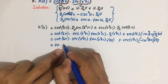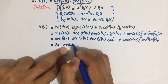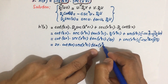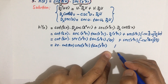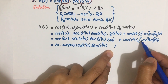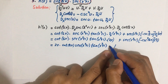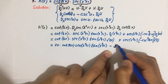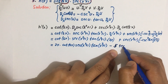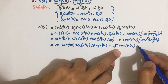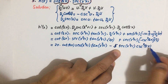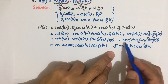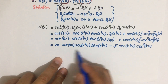Rearranging the terms, we write 2x first: 2x times cotangent 5x times secant of (x squared plus 1) times tangent of (x squared plus 1). Then, since the negative carries through, we have minus 5 times secant of (x squared plus 1) times cosecant squared of 5x. This is our first term and second term respectively.